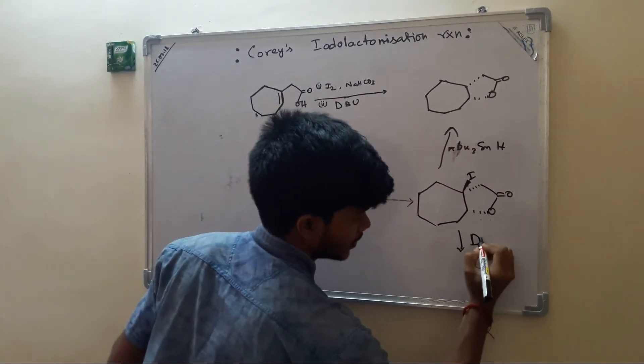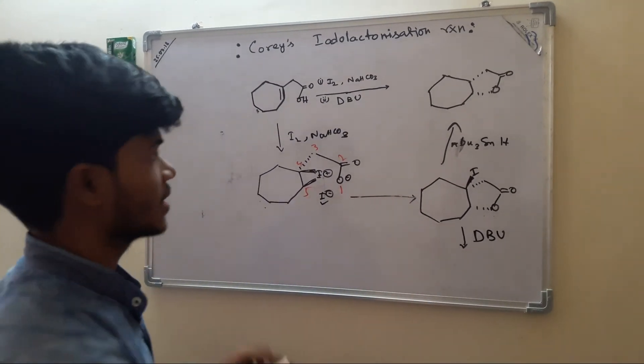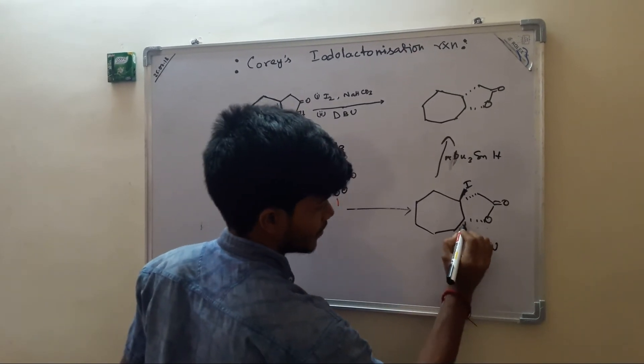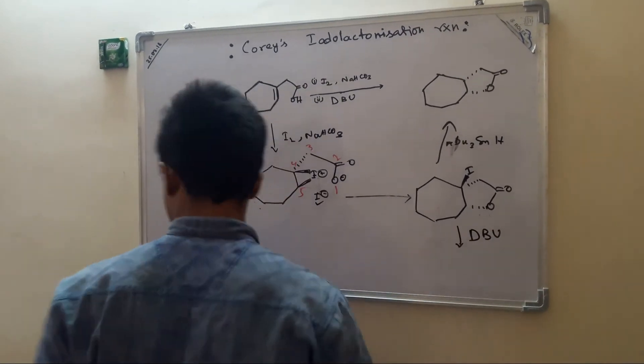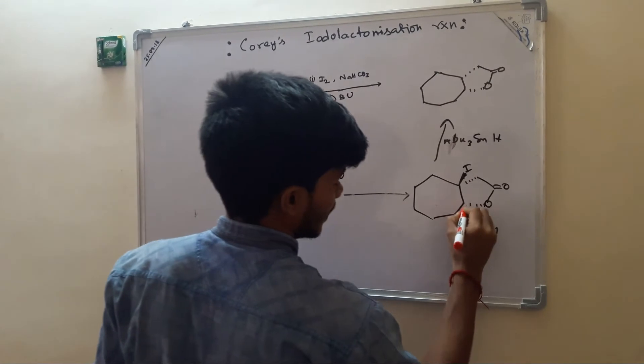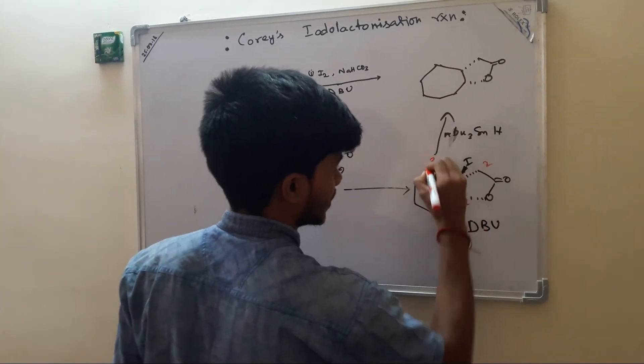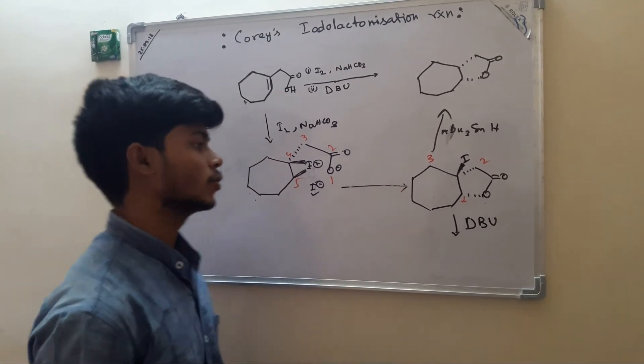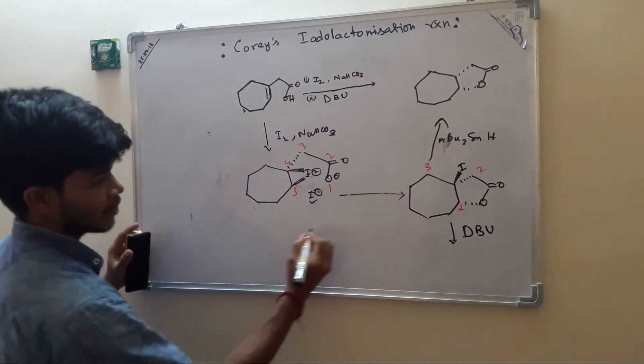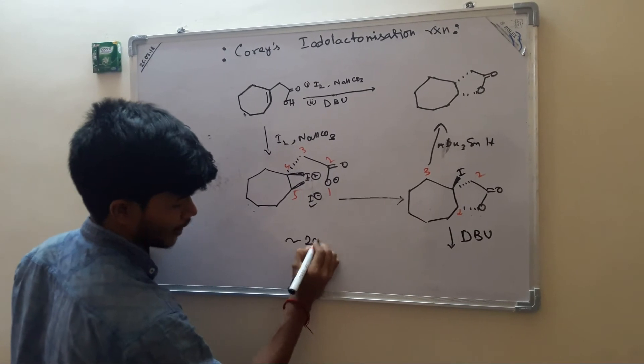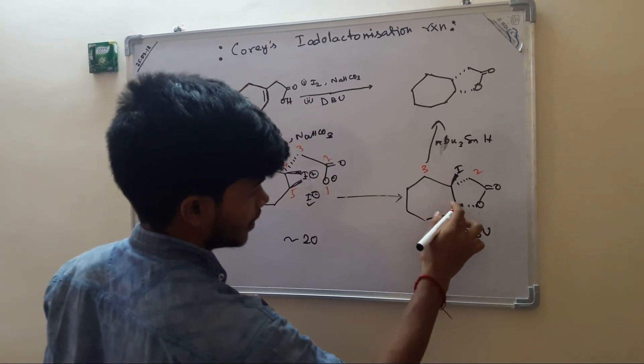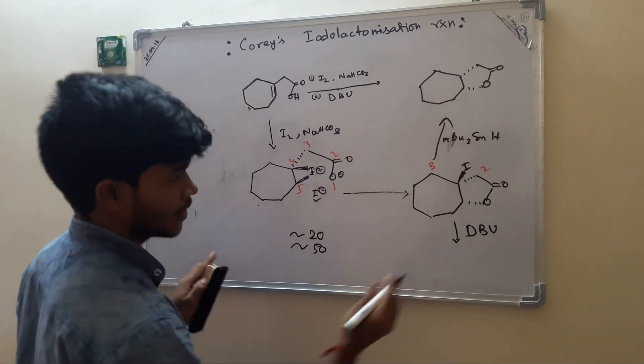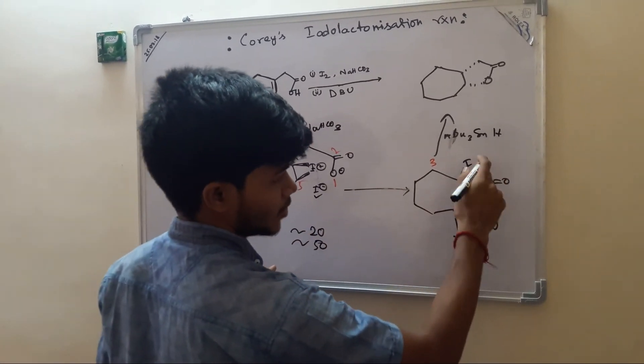If we treat it with base, which is DBU, then there is a possibility of hydrogen abstraction from three positions: one from here, one from here, one from there. Now as we all know, the hydrogen alpha to carbonyl has more acidity because it has pKa around 20, and the alkane has pKa around 50.